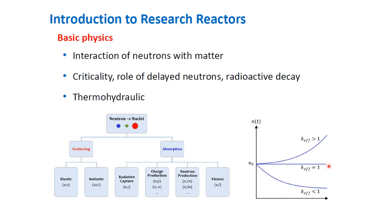When k-effective equals one, that is your critical environment. When k-effective is less than one, that is your subcritical environment — fewer neutrons are produced than consumed. When k-effective is greater than one, that is your supercritical environment — more neutrons are produced during the fission reaction. These principles are equally involved in research reactors, the same as in nuclear power reactors.